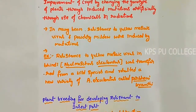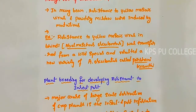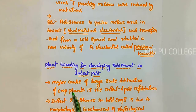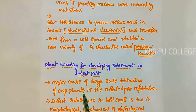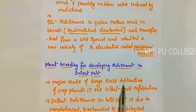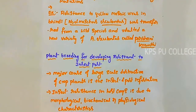The next topic is plant breeding for developing resistance to insect pests. A major cause of large-scale destruction of crop plants is insect and pest infestation. Insect resistance in host crops is due to morphological, biochemical, or physiological characteristics.